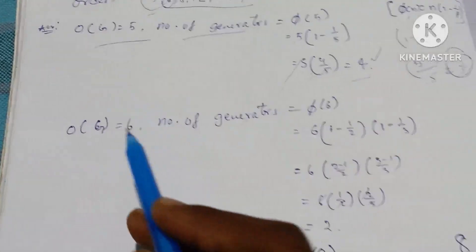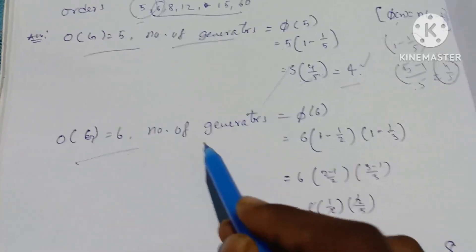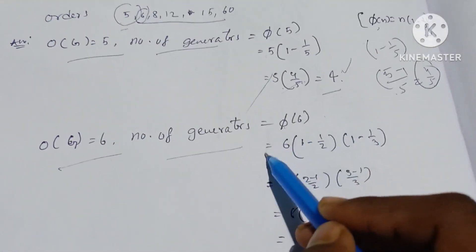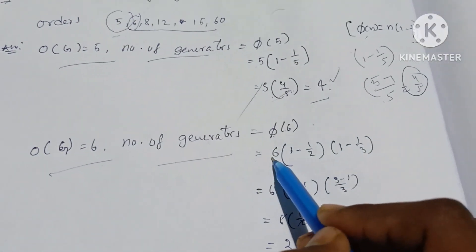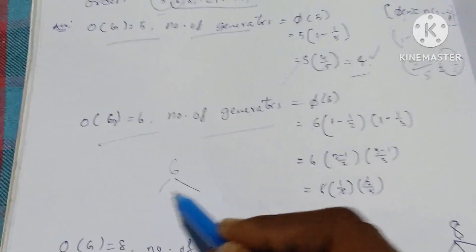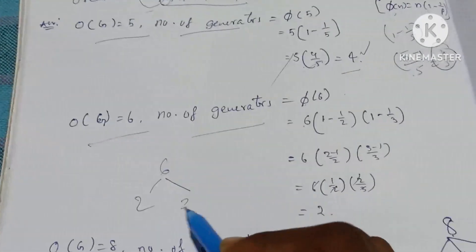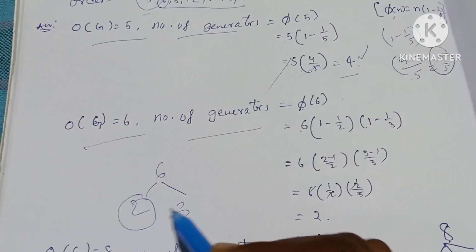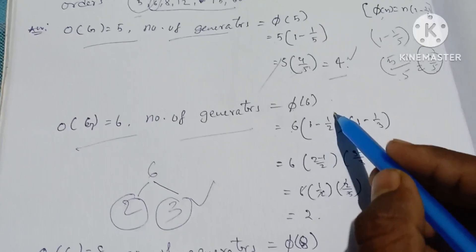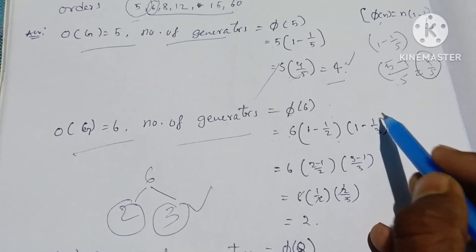Next, order 6. The order of G is equal to 6. Number of generators is equal to φ(6). The prime factors of 6 are 2 into 3 — two prime numbers. So: 1 minus 1 by 2, into 1 minus 1 by 3.